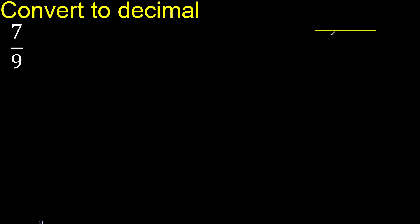7 divided by 9. 7 is less, therefore complete with 0. Here, 0 point.